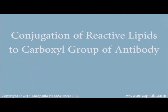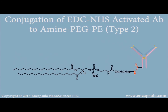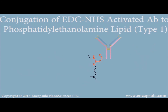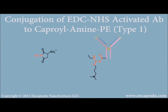Carboxylic groups on the antibody can be activated for conjugation to an amine using water-soluble carbodiimide reagents like EDC, but including sulfo-NHS in the reaction mixture generates an ester derivative that couples more efficiently than EDC alone. This reactive ester intermediate can further be conjugated to an amine-containing lipid such as amine PEG PE, PE, or caproylamine PE to form stable amide linkages.